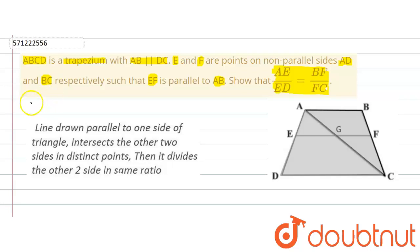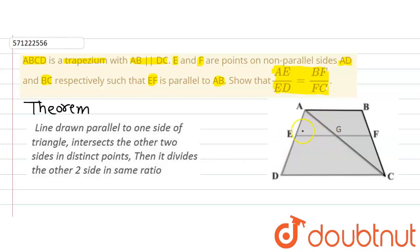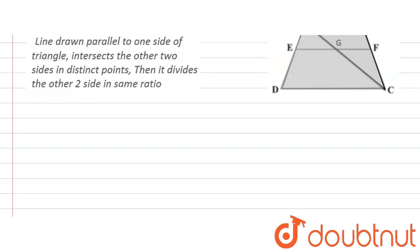We are going to use the following theorem: a line drawn parallel to one of the sides of a triangle divides the other two sides proportionally. For example, if EG is drawn parallel to DC, then AE divided by ED will be equal to AG divided by GC. This is what the theorem says, and using this theorem we will solve this question.